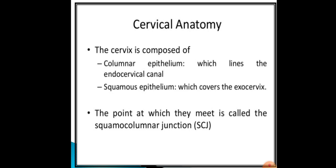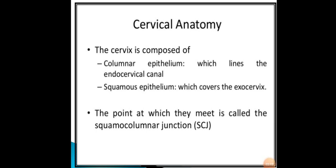The cervix is composed of columnar epithelium lining the endocervical canal and squamous epithelium covering the ectocervix. The point at which they meet is called the squamocolumnar junction. The transformation zone is the metaplastic squamous epithelium between the original squamocolumnar junction and the active squamocolumnar junction.